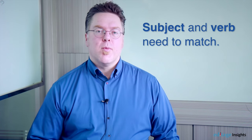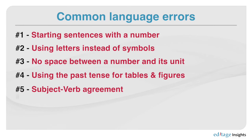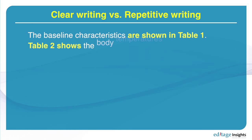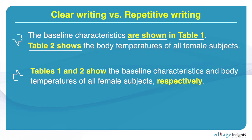This is something that when you're proofing your paper, you need to check for. The final mistake is having too many simple sentences — and not just too many simple sentences, but having repeated information back to back in simple sentences. For example: 'The baseline characteristics are shown in table one. Table two shows the body temperature of all female subjects.' We have table one, table two, 'characteristics are shown,' 'table two shows' — all repeated back to back. An easy fix is to say: 'Tables one and two show the baseline characteristics and body temperatures of all female subjects, respectively.'